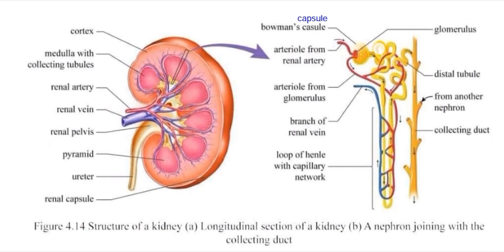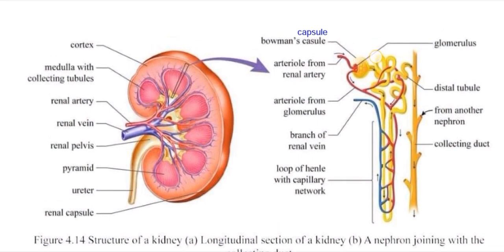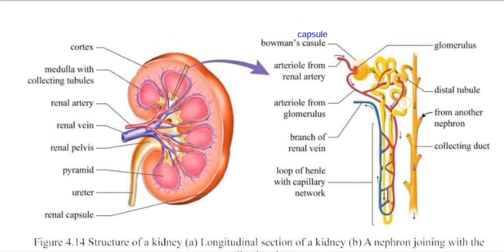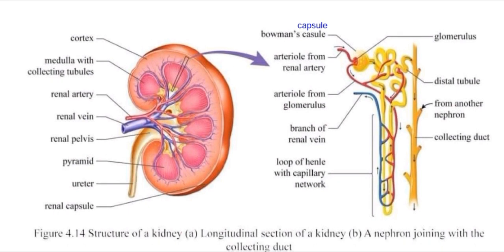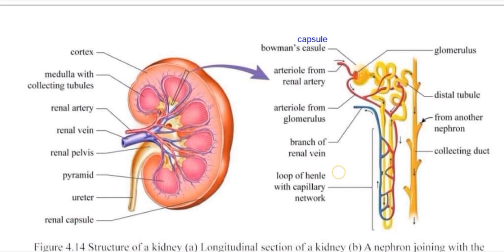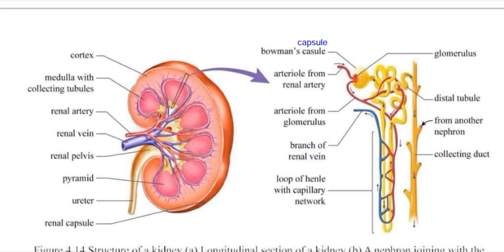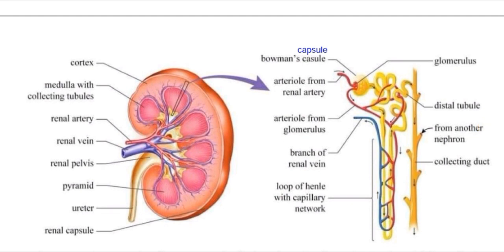The nephron has a proximal convoluted tubule and a distal convoluted tubule. There is also a loop with a capillary network, and it connects to the collecting duct.